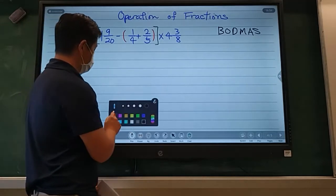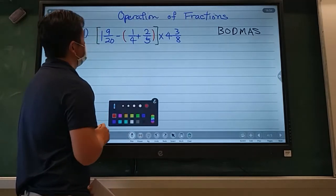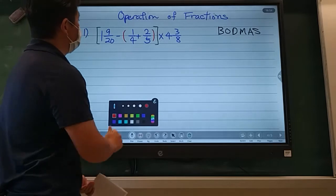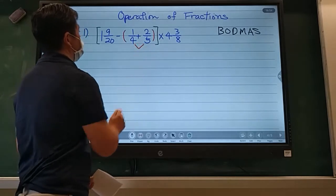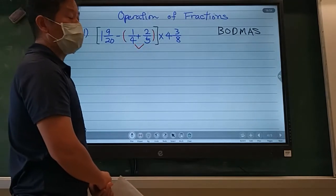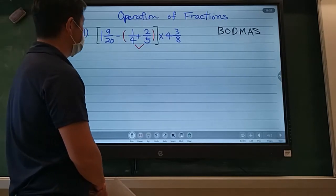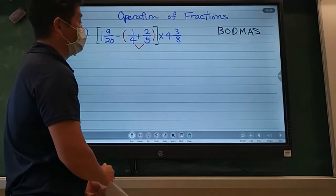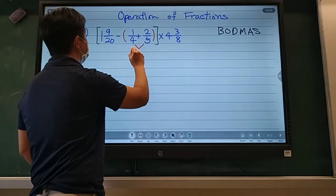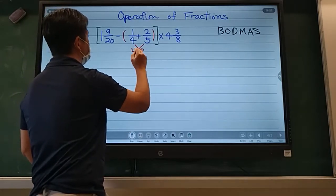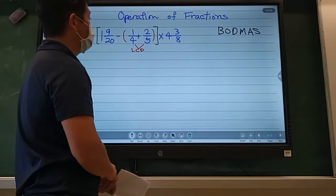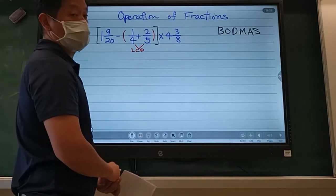So let's use a red marker. So one-fourth plus two-fifths. One-fourth plus two-fifths. I have two fractions I need to add together. What do we need to do? We need to find the lowest common denominator, right?